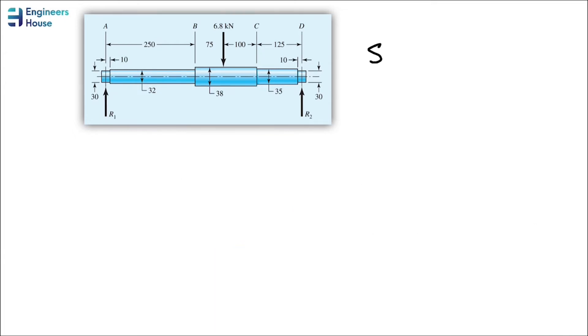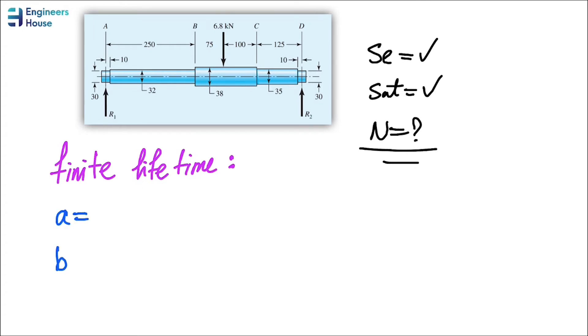We've got the values of Se and Sut, but what about the number of cycles? This is what we have to find now. Before anything else, we assume that this problem is of the finite lifetime kind. For the finite lifetime, we have some relations. If you remember from the previous video, we mentioned some parameters known as A and B. A is defined as this equation, and B is this. But in order to calculate A and B, we need to find out the amount of F. How to calculate the amount of F? If you remember from the previous video, we should use a diagram.